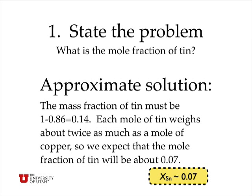Now an approximate solution is that the mass fraction of tin must be 1 minus the mass fraction of copper, which is 0.86 or 86%, and so that's 14%. But what I'm actually after is the mole fraction of tin. Now each mole of tin weighs about twice as much as a mole of copper, and so it's overly weighted in the mass fraction. So the mole fraction is going to be less than the mass fraction of tin, and by about a factor of 2, because each mole of tin weighs about twice as much as a mole of copper. And so I expect in advance that the mole fraction of tin will be 7%, or 0.07. And so I'm going to write xsn, which is a symbol for mole fraction of tin, is going to be about 0.07.